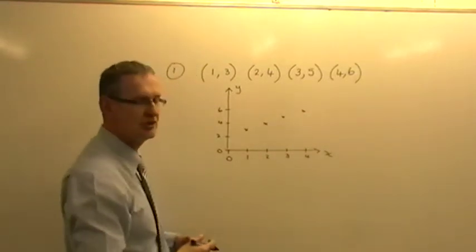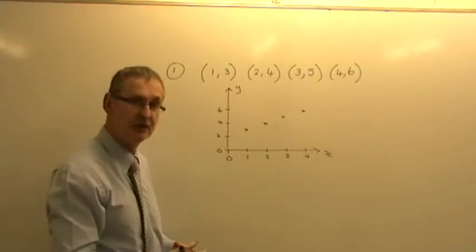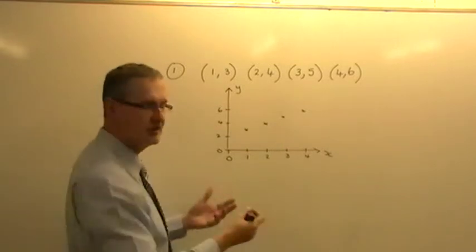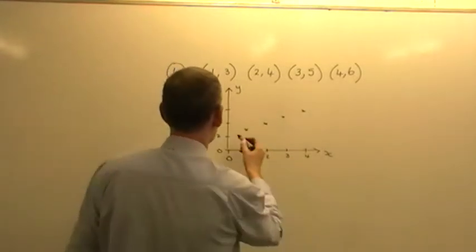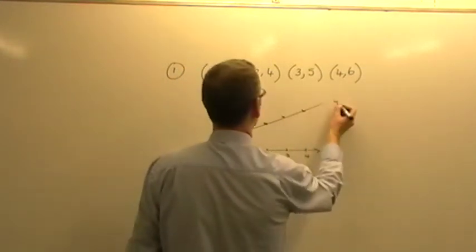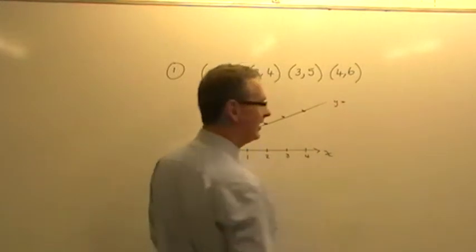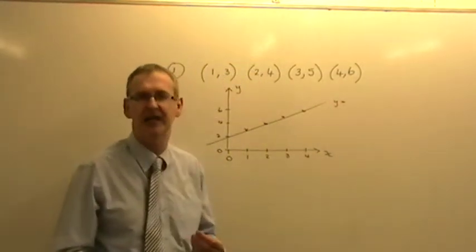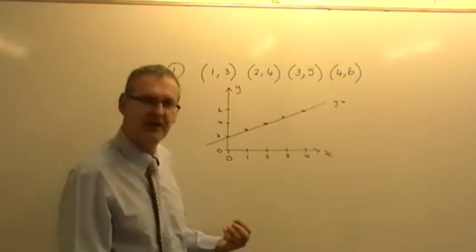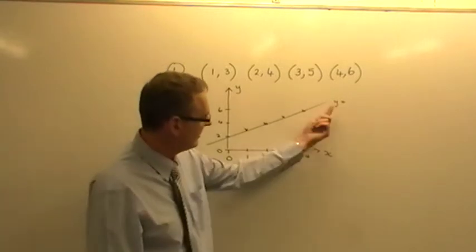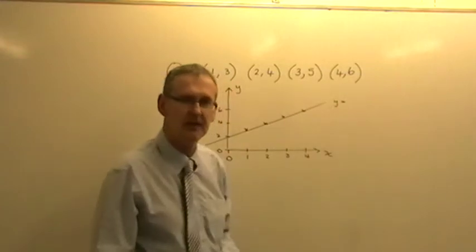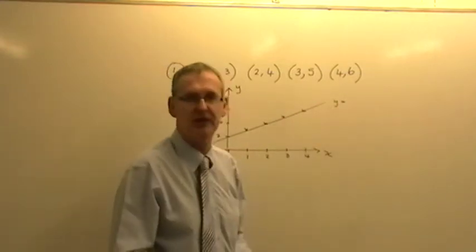You then get yourself a straight edge and you join them up. And you should find, because I've designed it to happen like this, that we get a straight line. OK, I'll just do it freehand, but you should be using a ruler, obviously. So something like this is what you're getting. And label it. y equals. Now the label we're going to give it is the name of the line, or in other words, the equation of the line.